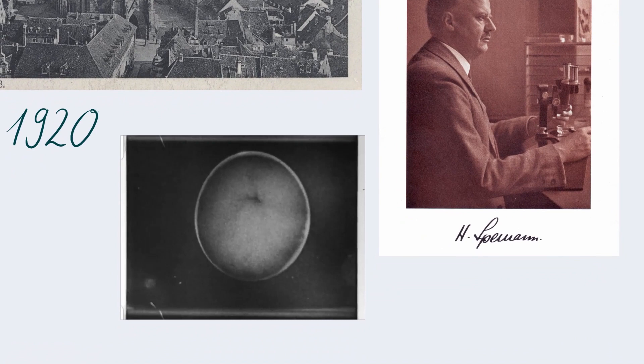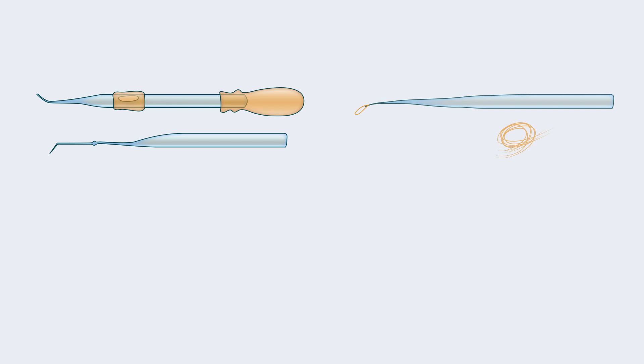For example, how cells coordinate to form organs and limbs in the right place. She was intrigued by Spemann's approach. He used very fine glass pipettes and human hair to perform microsurgery on amphibian embryos. After transplanting tissue from one to another, he observed closely how this affects development.